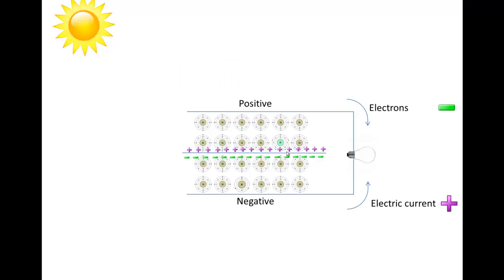And that's important because the direction of the movement of holes is the electric current, and the direction of movement of the electrons is in the opposite direction of the electric current.